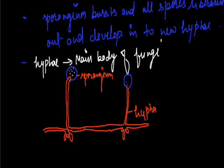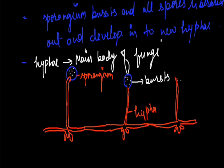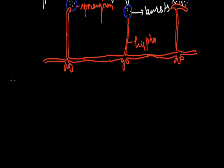The hyphae is the main body of fungi. When the sporangium bursts, all spores are liberated into the outdoor atmosphere and develop into a new organism under favourable conditions. This type of spore formation is found in fungi — for example, Rhizopus.